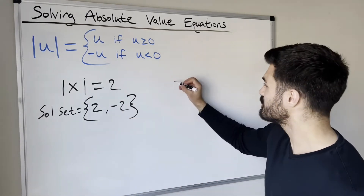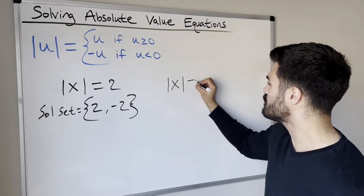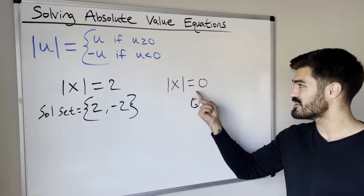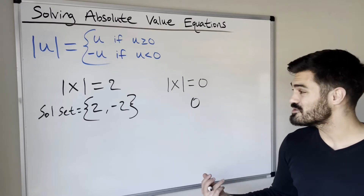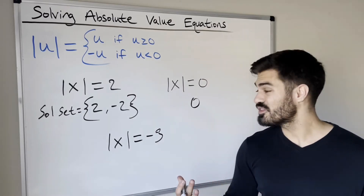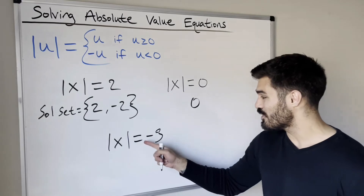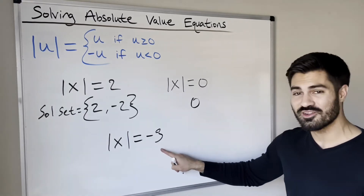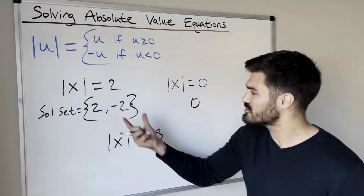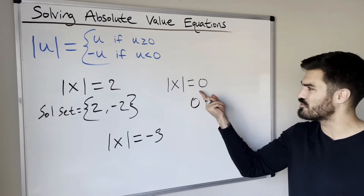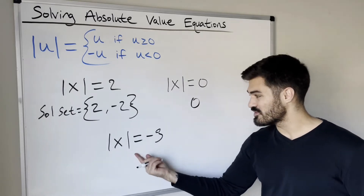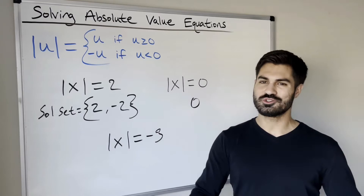Sometimes we can have one solution. For example, absolute value of x equals 0 has only one solution: zero. There's no other real number whose absolute value is 0. And sometimes there are no solutions. For instance, what can we take the absolute value of to get negative 3? Nothing — there's no real number whose absolute value equals a negative number, since absolute value is always greater than or equal to zero. So there are really three possibilities: two solutions, one solution (only when absolute value of something equals zero), or no solution (when it equals a negative number).